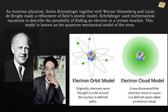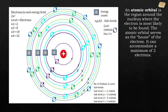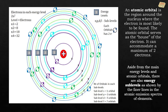Austrian physicist Erwin Schrödinger, together with Werner Heisenberg and Louis de Broglie, made a refinement of Bohr's atomic model. Schrödinger used mathematical equations to describe the probability of finding an electron in a certain location. This model is known as the quantum mechanical model of the atom. An atomic orbital is the region around the nucleus where the electron is most likely to be found, and it can accommodate a maximum of two electrons.